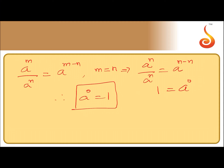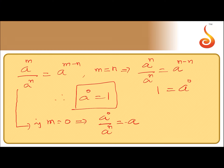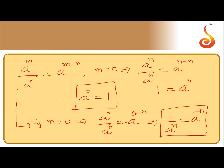Now, using the same formula, if I take m equal to 0, then a^0 divided by a^n equals a^(0-n). Since a^0 equals 1, we get 1 divided by a^n equals a^(-n). So in general, a^(-n) is nothing but 1 divided by a^n.